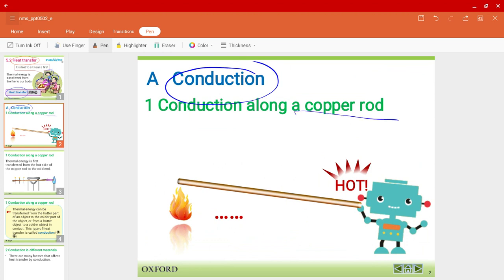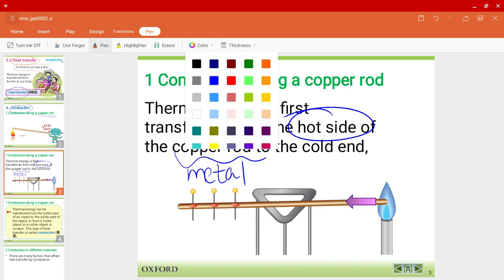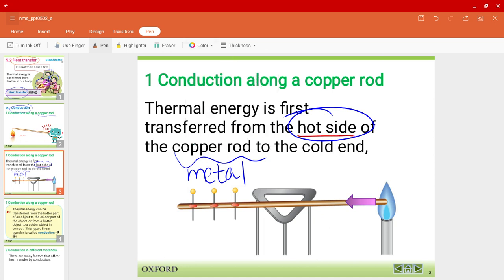We'll be using a copper rod in this example. Thermal energy is actually first transferred from the hot side of the copper rod. Just to let you know, copper is a metal. The thermal energy will be transferred from the hot side of the copper rod. For example, we have a Bunsen burner over here. Thermal energy will be transferred to the other end, which is the cold end.